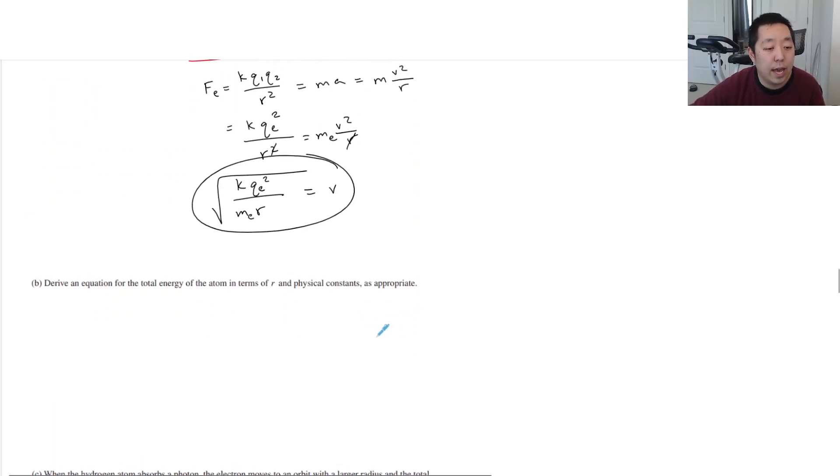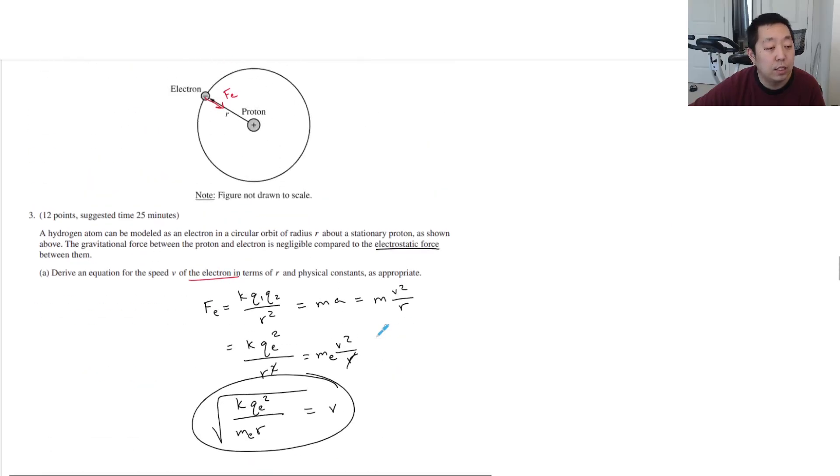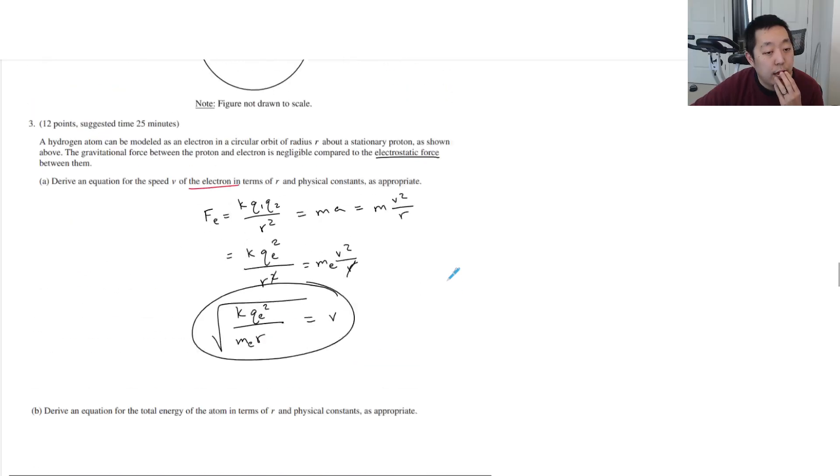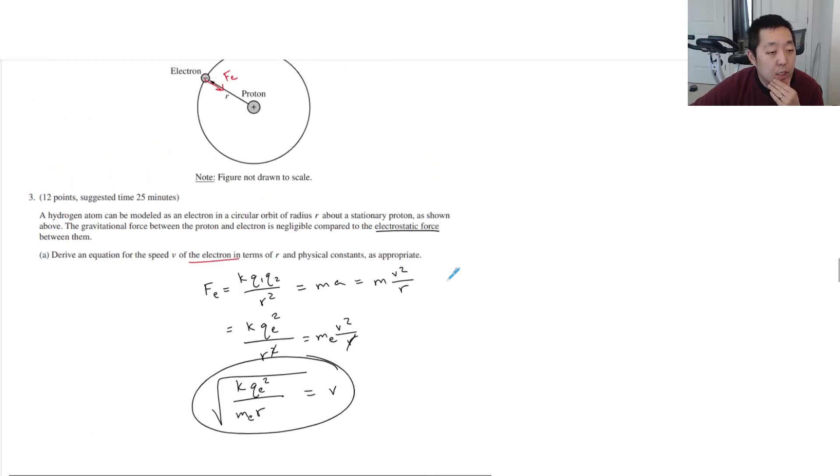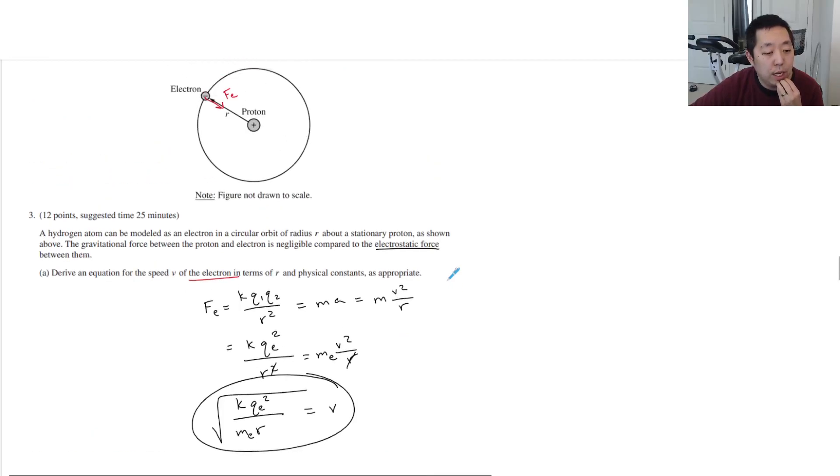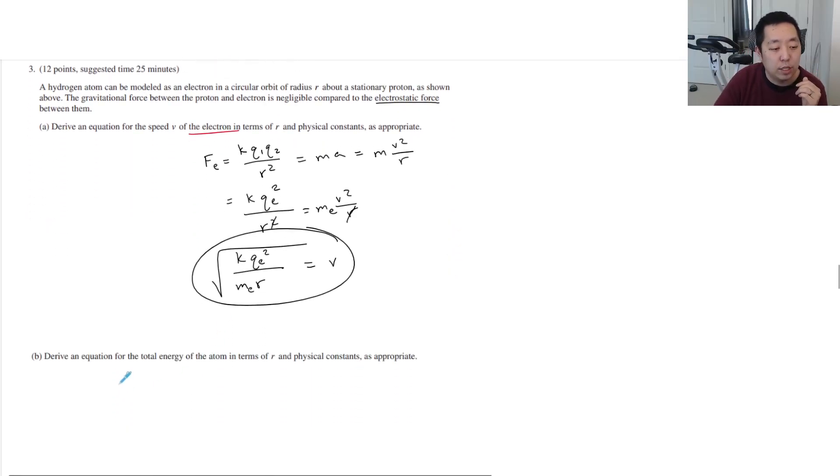Okay, derive an equation for the total energy of the atom in terms of r and physical constants as appropriate. So they're just modeling it as an orbiting proton here. I'm curious what energies I would want to include. The question I ask myself is, would I do the kinetic energy of the electron because it's moving. Do I want to add the rest mass of the atom? Do I want to do E equals mc squared? I guess I might as well, because there is some matter in there.